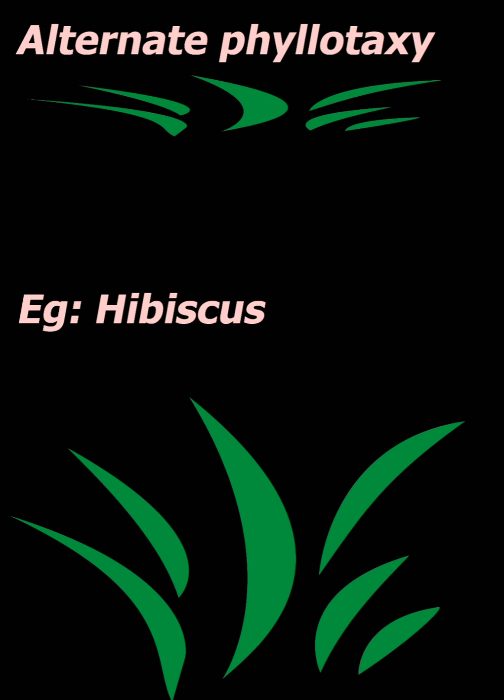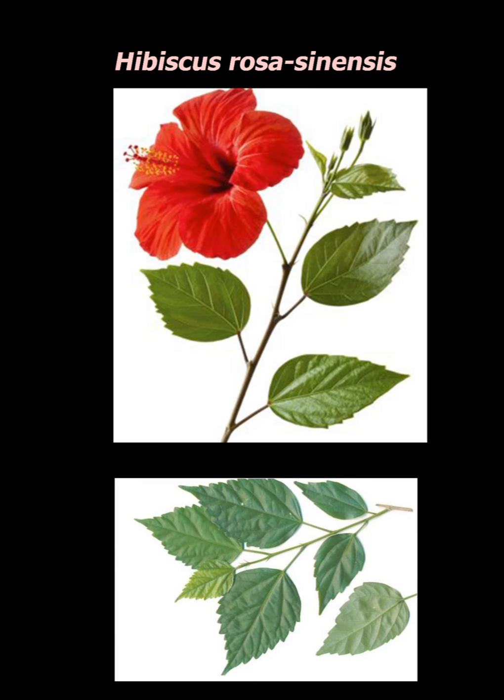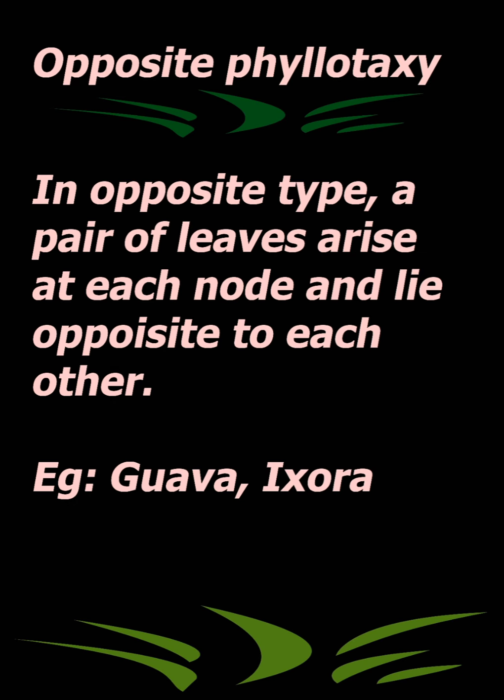For example, hibiscus. In opposite phyllotaxy, two leaves arise at each node and lie opposite to each other. Examples include guava and ixora.